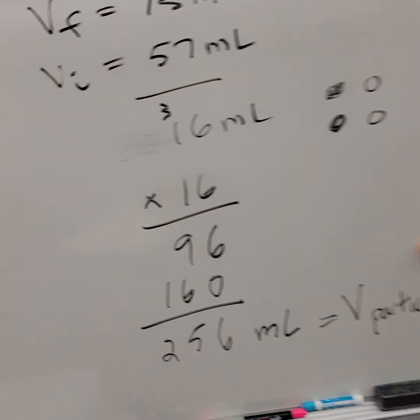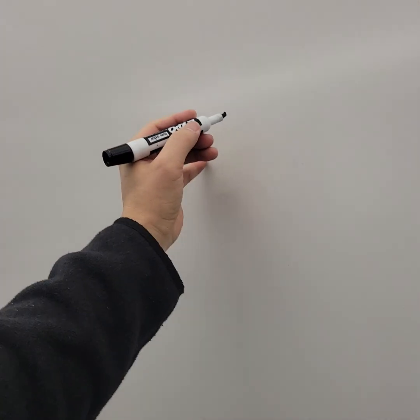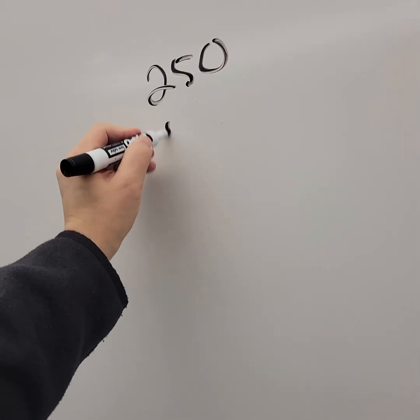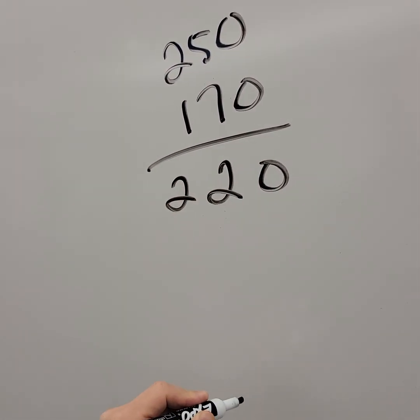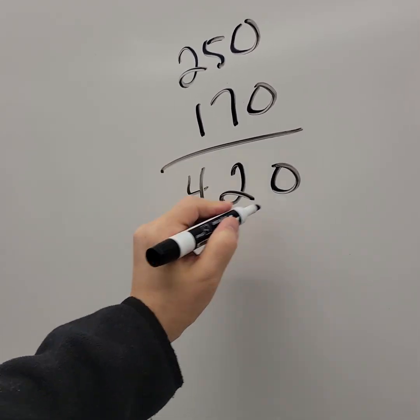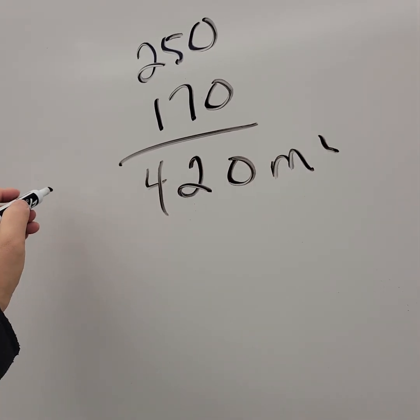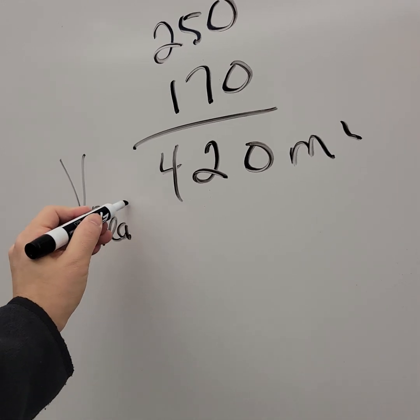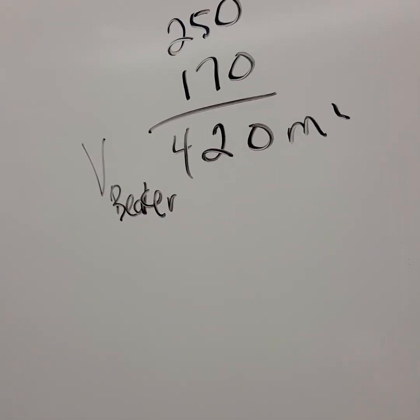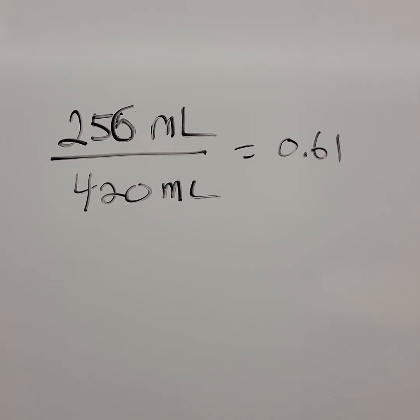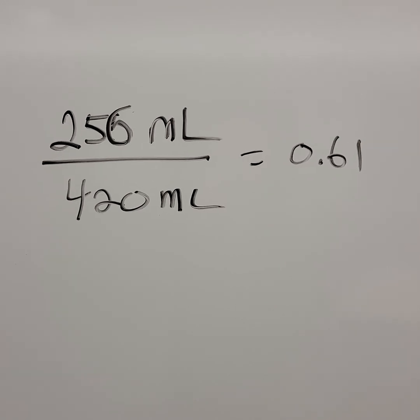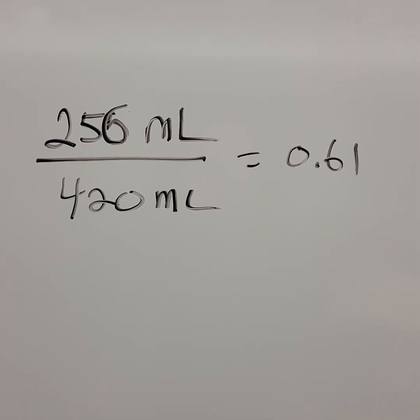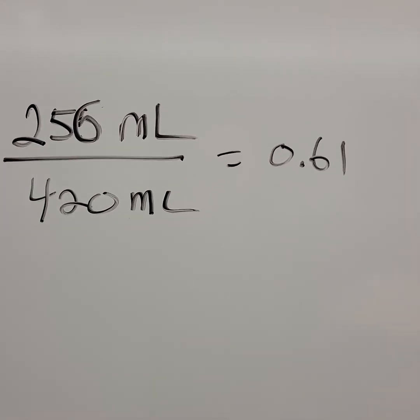Is that a 420? Let's see if I can do this. So there's my total volume of the beaker. So one way you can get the packing fraction is, I put the volume of the particles over the volume of the beaker. And I got a packing fraction of 0.61 or 61%.